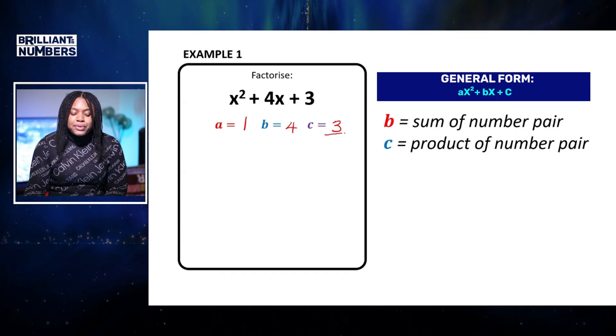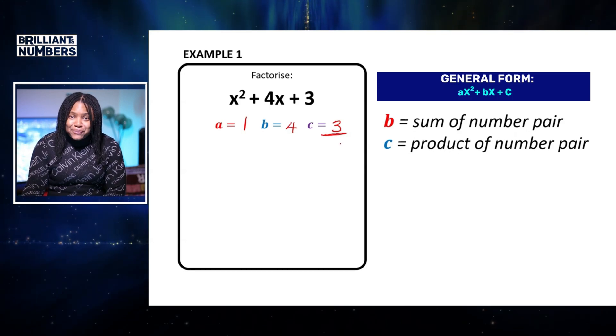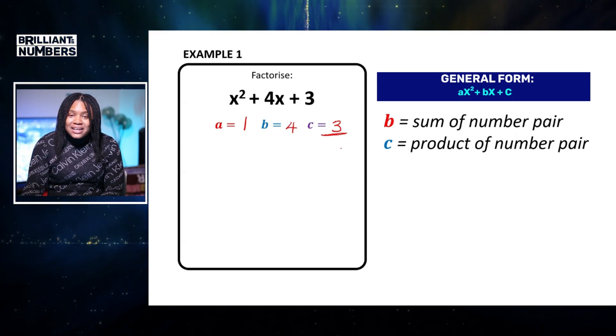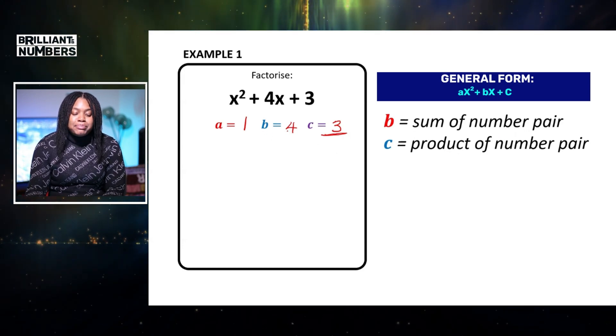So we want the product, two numbers that multiply together to give us three, and those two numbers must also add to give us our b term.